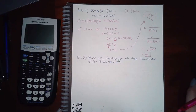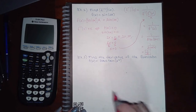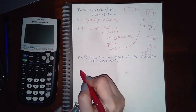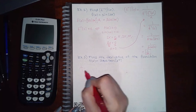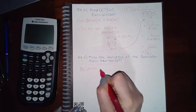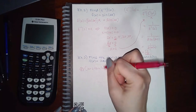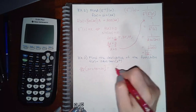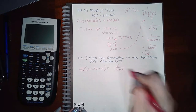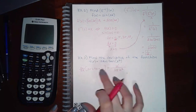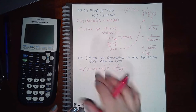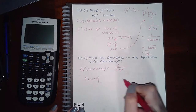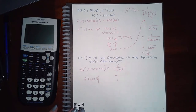Here we have Example 3: find the derivative of f(x) = 3·arctan(x²). We have to use the rule that says the derivative of arctan(u) equals u' over 1 plus u squared. In this case, u is the angle and 3 is just a constant multiplier, so f'(x) is going to be 3 times the derivative of arctan(x²).